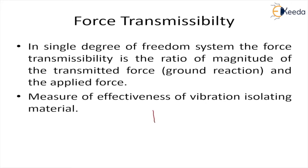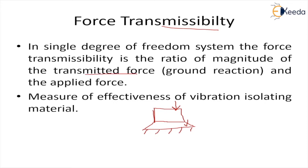Let's assume there is some body or mass — a rotating body — fixed on a foundation. Whatever force is applied on this body, a part of it gets transmitted to the foundation. That ratio gives the value of force transmissibility, which is the ratio of the magnitude of transmitted force to the applied force.